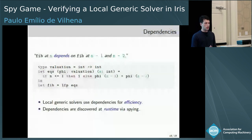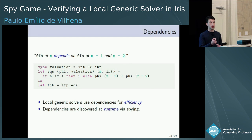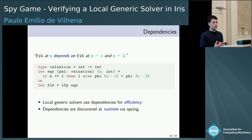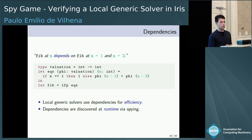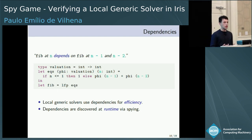The relation between local generic solvers and spying comes from the intuitive notion of dependencies. We can say that Fibonacci at N depends on Fibonacci at N-1 and Fibonacci at N-2. This idea of dependencies is used by local generic solvers for efficiency — for doing minimal work. Dependencies are discovered at runtime by spying — that is where spying comes in.